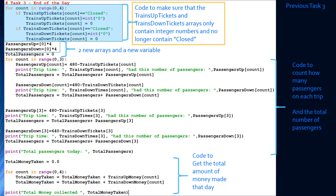Let's look at the code from the last video. We had a for loop that was used to make sure that the trains-up tickets and trains-down tickets arrays only contain integer numbers, and no longer contain the word 'closed' — had they been changed from the integer 0 to the word 'closed'. This for loop just changed any strings 'closed' back to an integer.